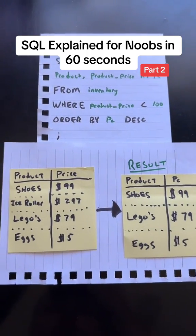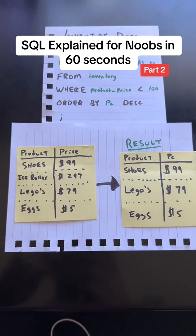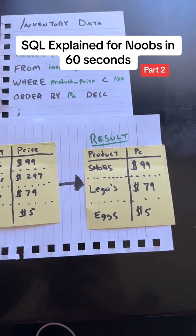So after ending with the semicolon, it would take the original data table and put it into this, where basically we're filtering out the ice roller and then, of course, ordering by the price column.